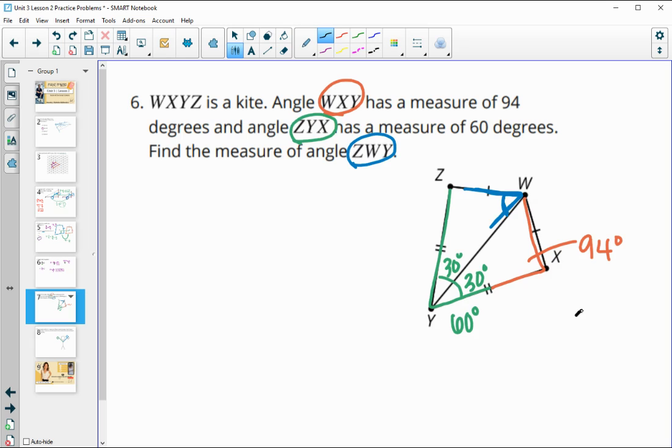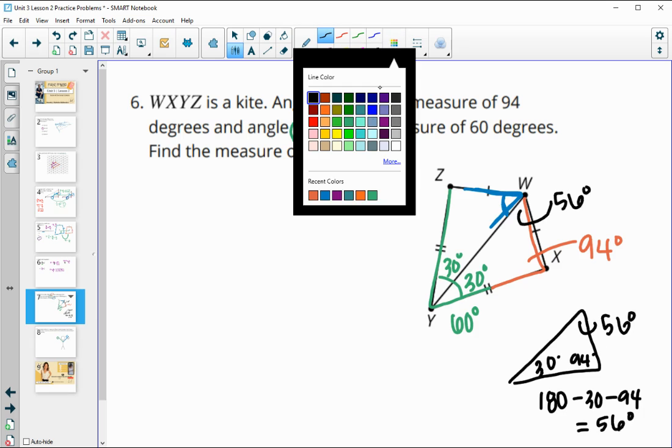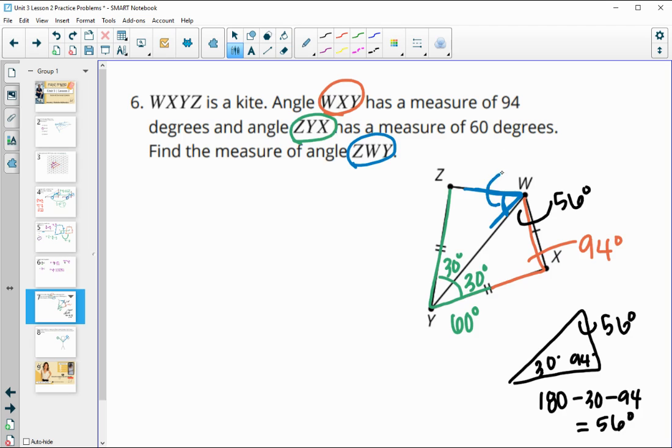What that does for us is gets us in this bottom triangle. Now we know that this angle is 30, this one is 94, and we know the total of a triangle is 180. So we could take 180 and subtract 30 and subtract 94, and we would end up with 56 degrees here for this angle, which we then know is also the same as this blue angle here, since these are corresponding when we reflect over that line of symmetry. So that would be the measure of angle ZWY that we're looking for.